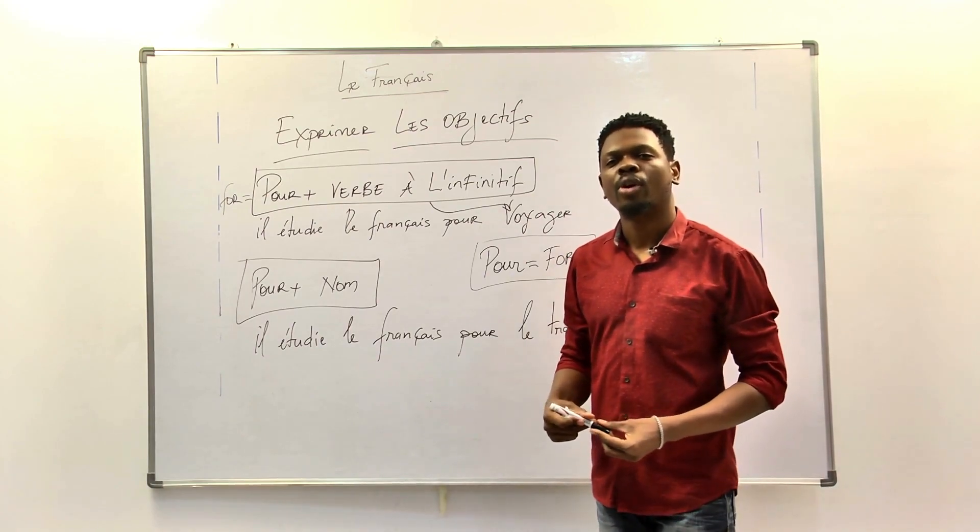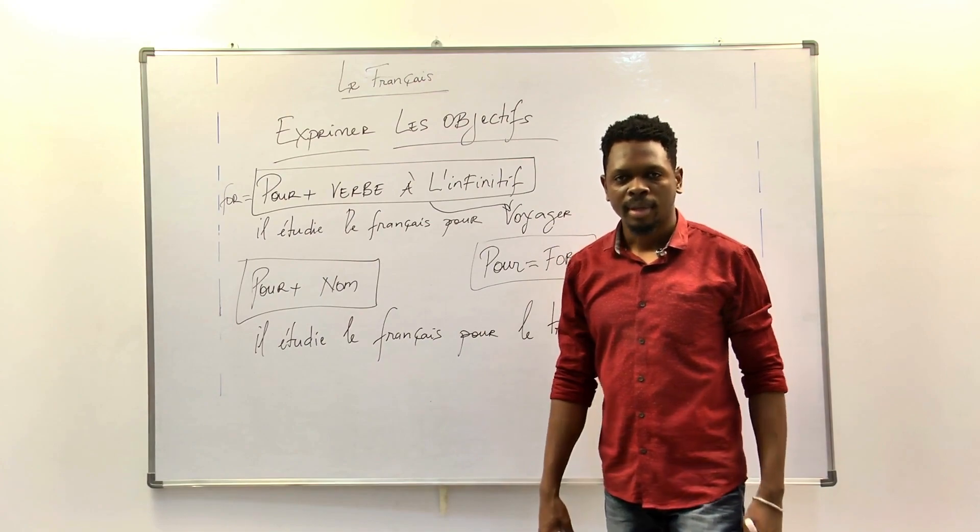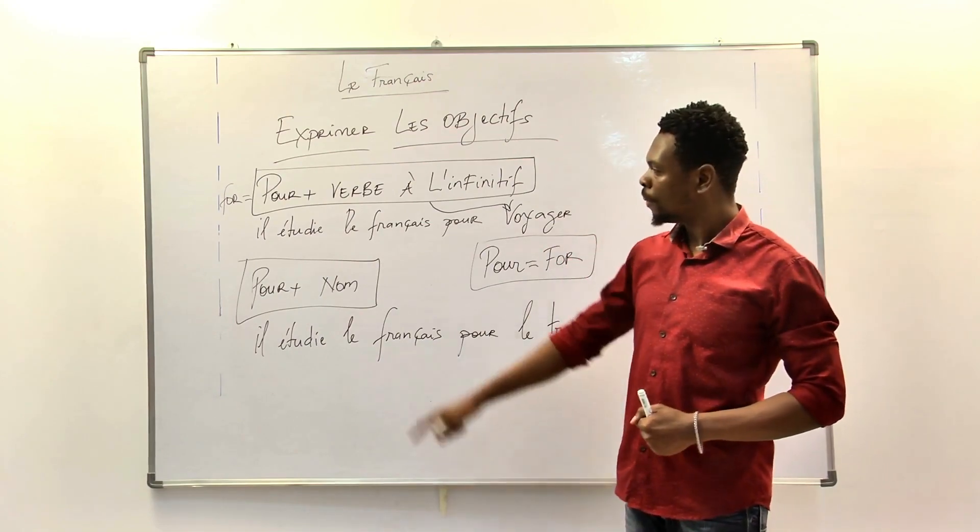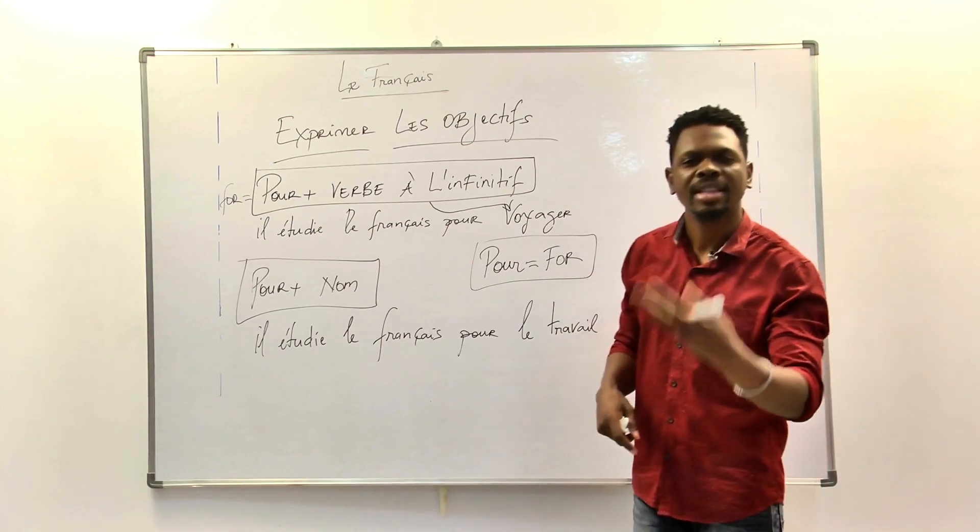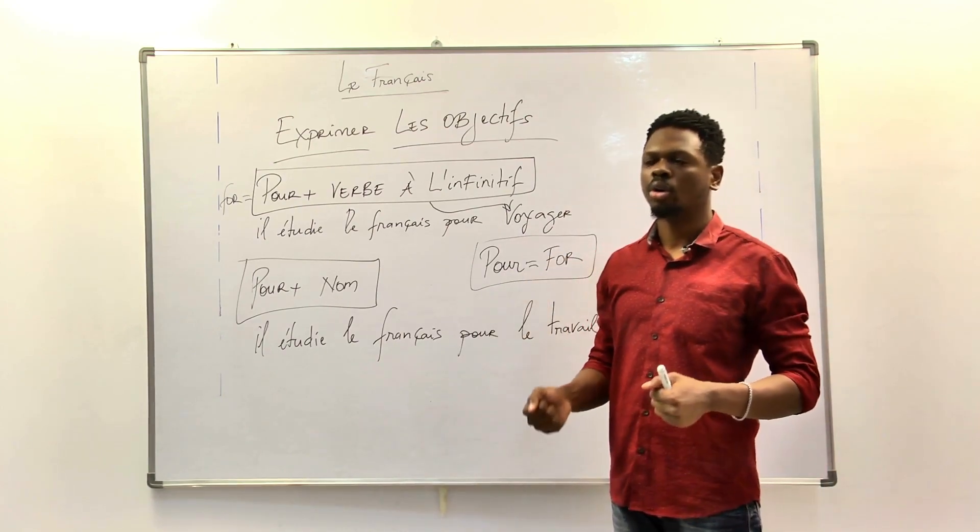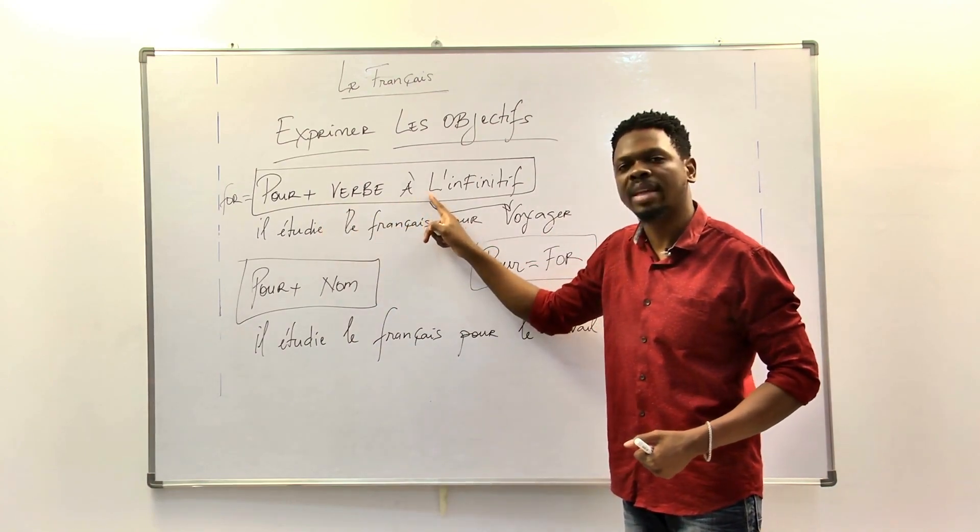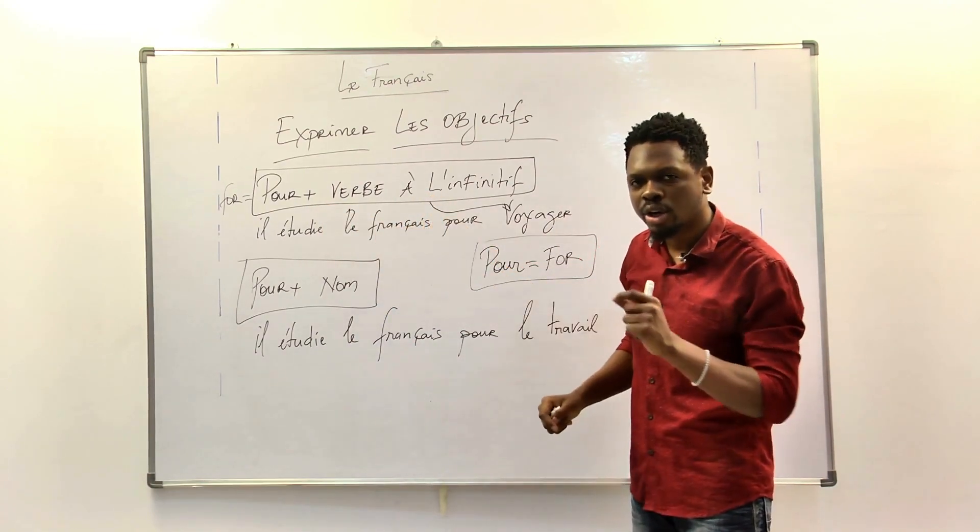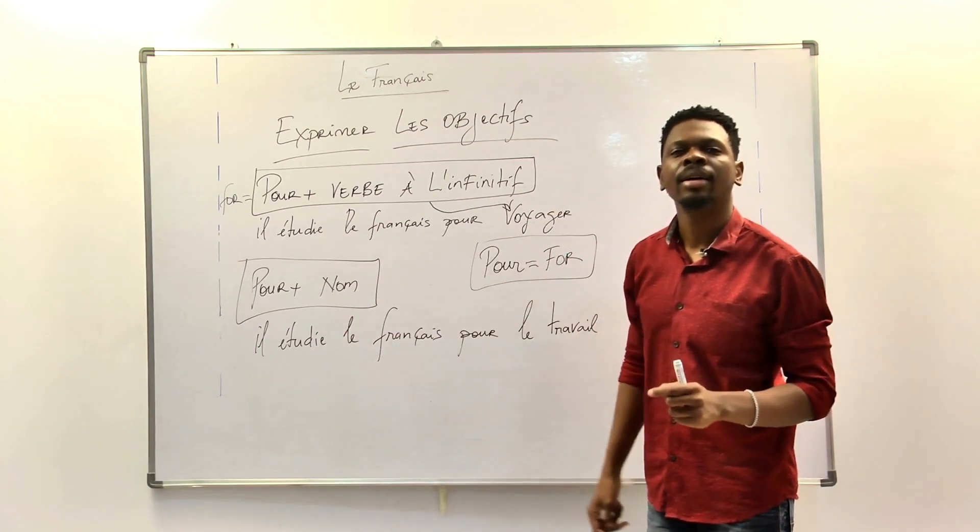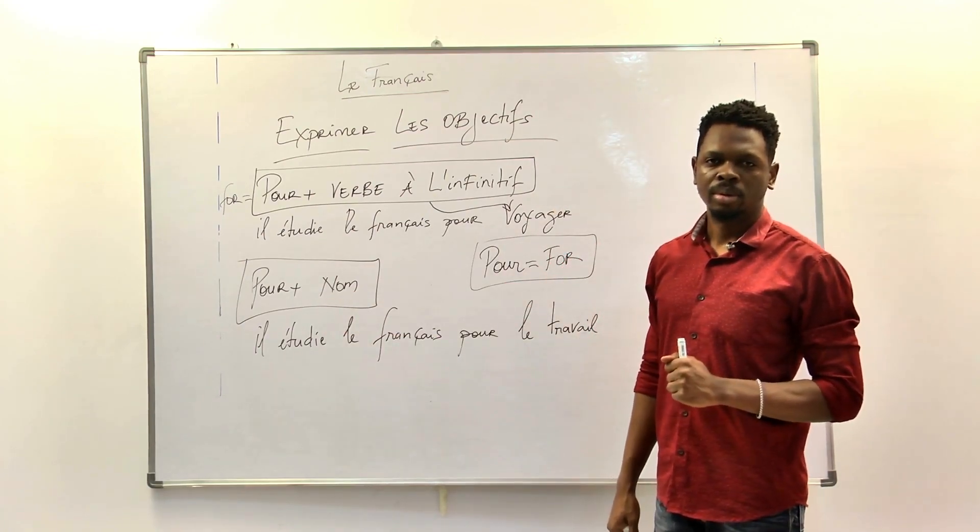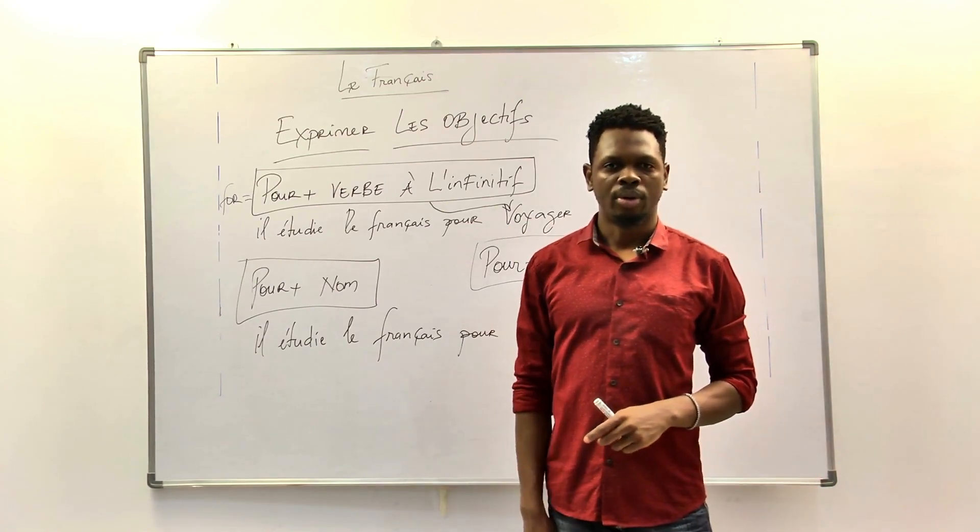Two ways to tell about your objective using pour. It's very necessary. Pour means for. For eating, for sleeping, for dancing. Here we use pour plus verb in infinitif, a non-conjugated verb. Or pour plus nom, a name. Two ways.